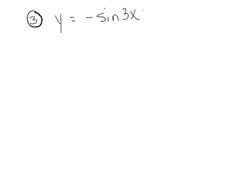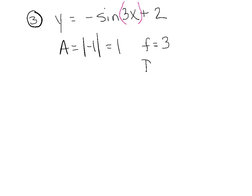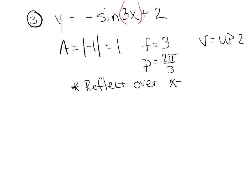Our last example: negative sine of 3x plus 2. We're taking the sine of 3x only. The amplitude is the absolute value of negative 1, which is 1. The frequency is 3, so the period is 2 pi over 3 — the challenging one we saw earlier. The vertical shift is up 2 units. Because the leading coefficient was originally negative, this needs to be a reflection — not over the x-axis, but over the midline.